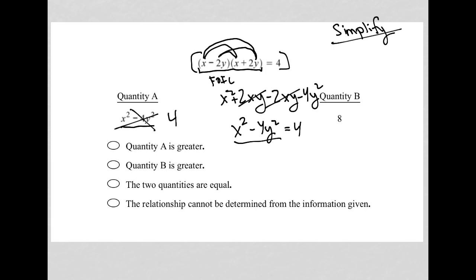Because that's what we're told. We're told that x squared minus 4y squared equals 4. It's just that the question didn't give it to us in that format. It gave that information to us in this product of binomials format, and I had to do the simplification to see that these two things are equivalent.